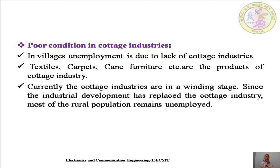The next reason which creates unemployment is poor condition in cottage industries. Cottage industries are home-based units of production where people produce goods such as wool in their homes. In villages, unemployment is due to lack of cottage industries. Products like textiles, carpets, and cane furniture are produced in cottage industries, which are the main source of employment in rural areas. Currently, cottage industries are in a winding-down stage, and since industrial development has replaced cottage industry, most of the rural population remains unemployed.